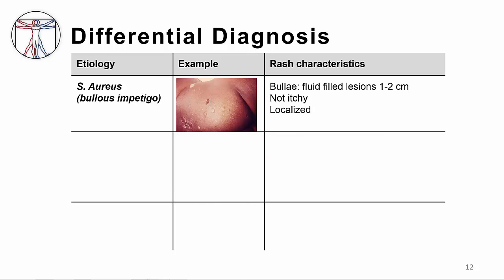Infection with Staph aureus causes an illness named bullous impetigo. However, the fluid-filled lesions are larger than what we see in VZV. The rash isn't typically itchy, and it usually isn't as widespread as VZV — just localized to one part of the body.